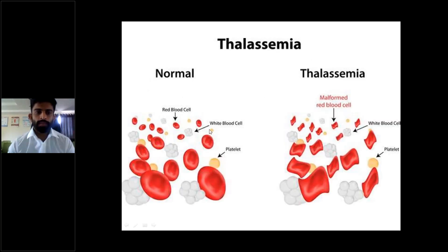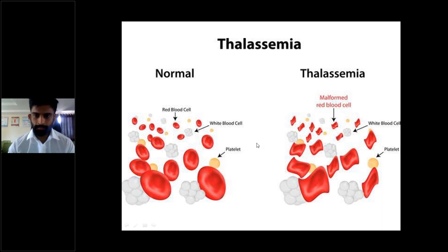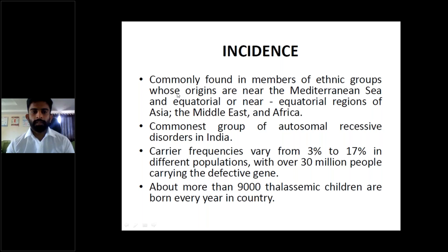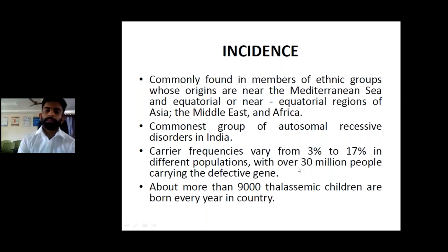In thalassemia, there is a malformed red blood cell because of the abnormal globin synthesis, eventually leading to hemolysis. Thalassemia is commonly found in ethnic groups originating near the Mediterranean Sea and equatorial or near-equatorial regions of Asia, the Middle East, and Africa. It is the commonest group of autosomal recessive disorders in India, with carrier frequencies varying from 3% to 70% in different populations, with over 13 million people carrying the defective gene. More than 9,000 thalassemic children are born every year in India.